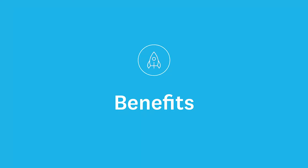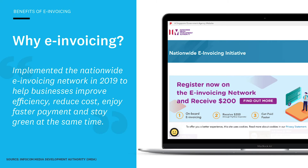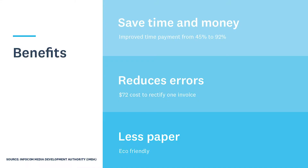Now we know what e-invoicing is and how it works — let's look at some of the benefits. IMDA officially implemented the PEPL network in Singapore last year, and the main aim was to help businesses improve efficiency, reduce cost, and get paid faster. IMDA have quantified some of these benefits, estimating that a business will save a significant amount of time and money. The estimates of time savings are between 45% and 92%. Correcting mistakes takes time and costs money — IMDA estimates it costs on average $72 to rectify one invoice. So by eliminating these sorts of mistakes, there are big savings. And of course, not using paper is so much better for the environment.